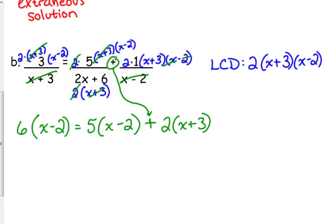At this point, we've got to distribute those constants and then solve the equation. So we have 6x minus 12 is equal to 5x minus 10 plus 2x plus 6.